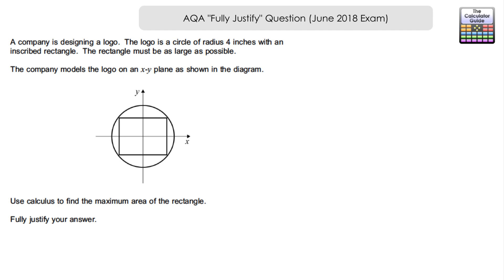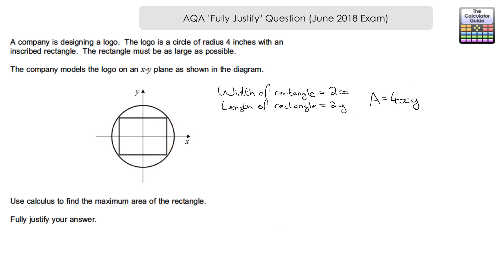We need to find an equation to represent the area of the rectangle. We label the horizontal half-width from the y-axis to the circumference as x, and the vertical half-height from that point up to the x-axis as y. The full width of the rectangle is 2x and the full height is 2y, so the area of the rectangle is 2x times 2y, which equals 4xy.